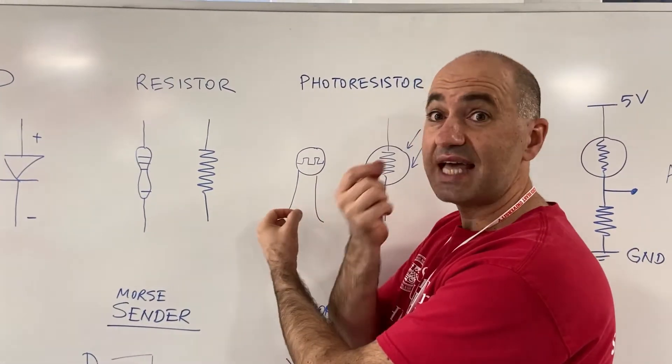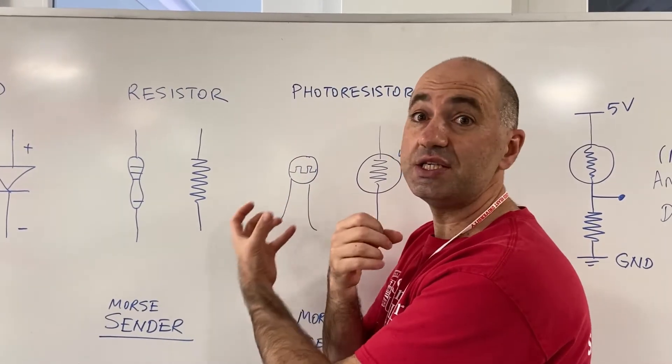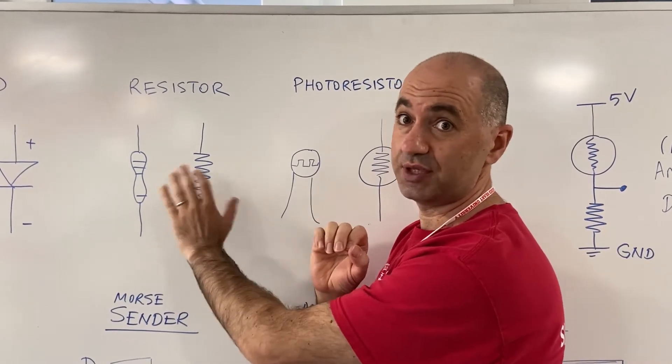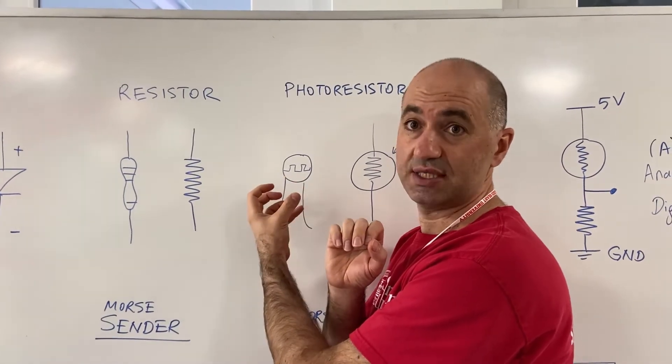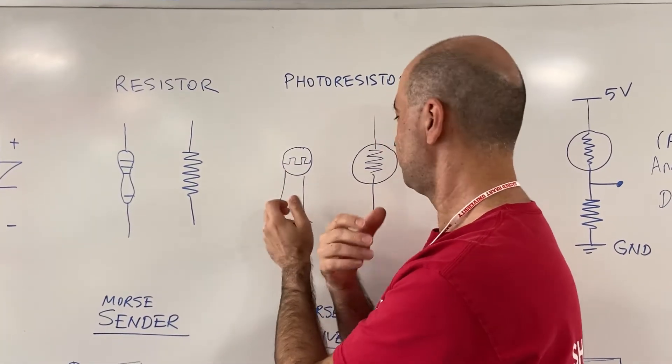There is another one that is a sensing component that senses light and changes its resistor value. A regular resistor has a fixed value that doesn't change. A photoresistor changes its resistance value, and that's how we sense the light's intensity.